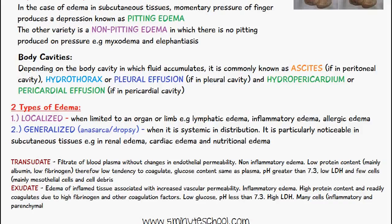When talking about the fluid moving into these spaces, it can either be transudate or exudate. Transudate is a filtrate of blood plasma without any changes in endothelial permeability — it's a non-inflammatory edema. It has low protein content; the main protein is albumin with low fibrinogen, giving it a low tendency to coagulate. Glucose content is the same as plasma, pH is greater than 7.3, LDH is low, and there are few cells — mainly mesothelial cells and cell debris.